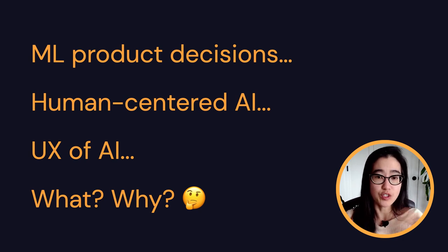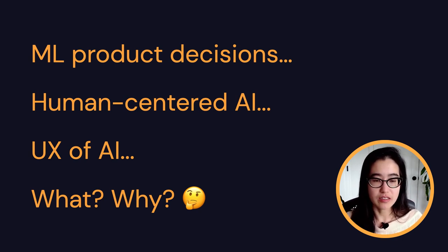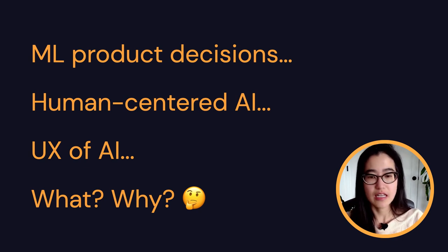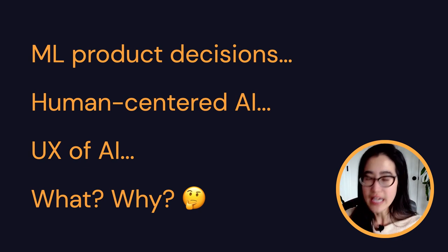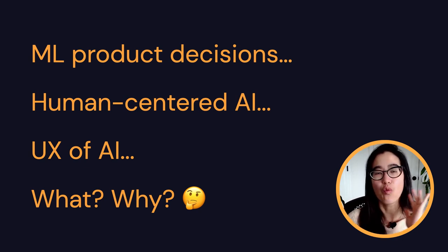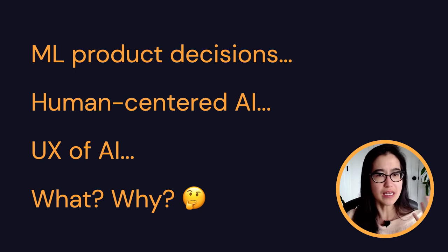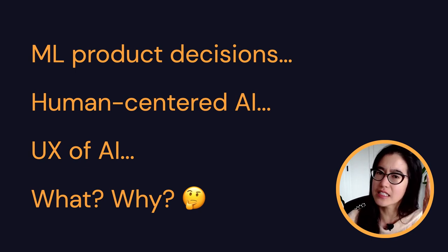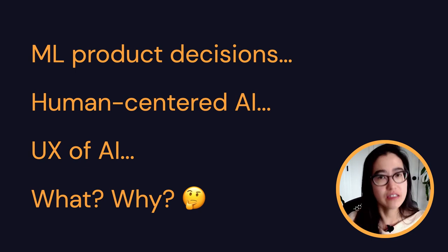You may also see on Twitter or the internet, various blogs, all these different types of terms: ML product decisions, human-centered AI, UX of AI. What do we mean by all this, and why does it actually matter? How does that pertain to you?